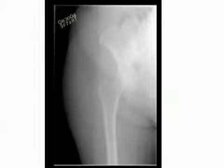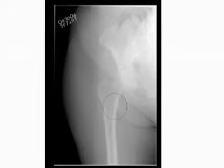The AP proximal femur radiograph should demonstrate all skeletal anatomy of the majority of the femur, with the lesser trochanter not seen beyond the medial border of the femur. Appropriate contrast and density will demonstrate both soft tissue and trabecular bone.